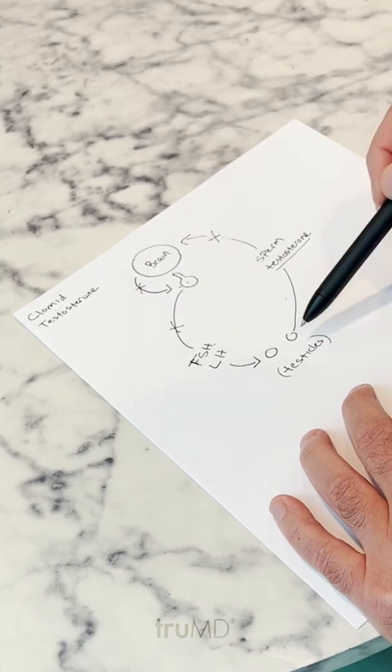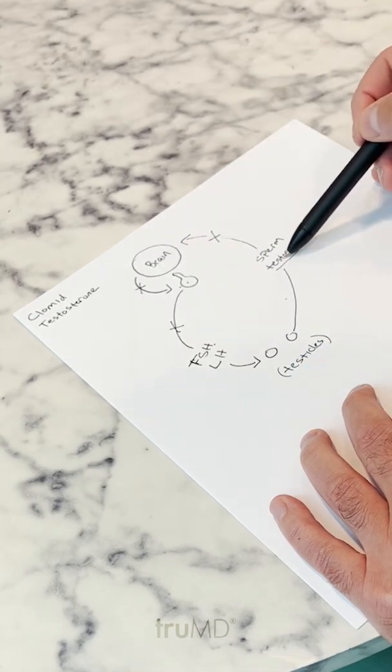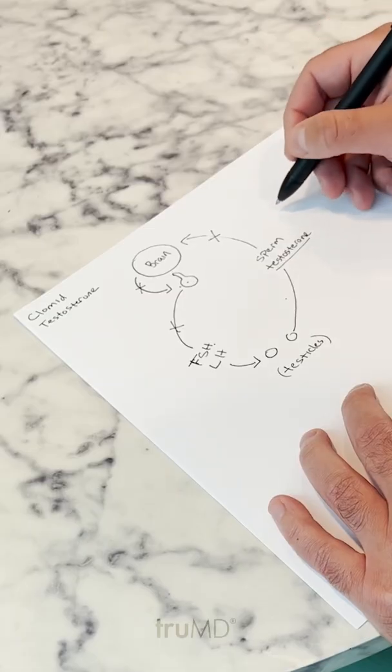If your testes are no longer capable of making good testosterone, then clomid is not going to help you. For these patients whose testes are no longer working properly, they need straight testosterone.